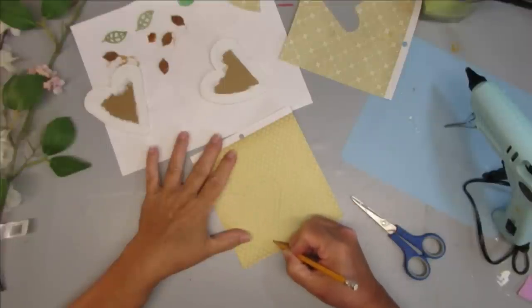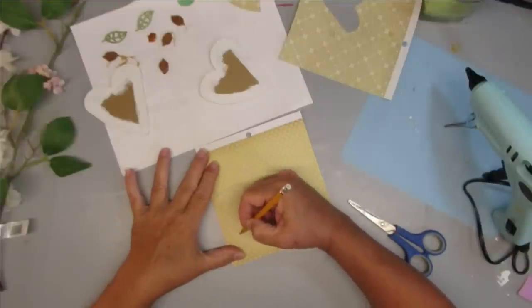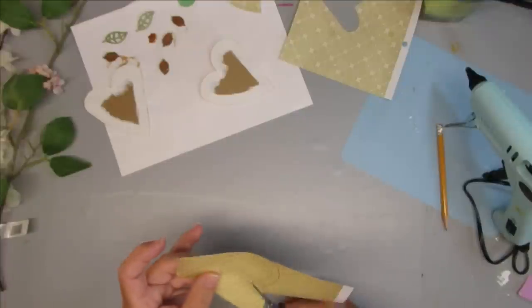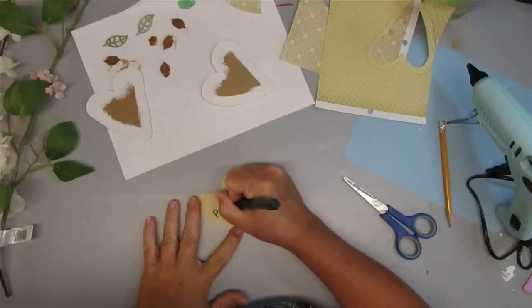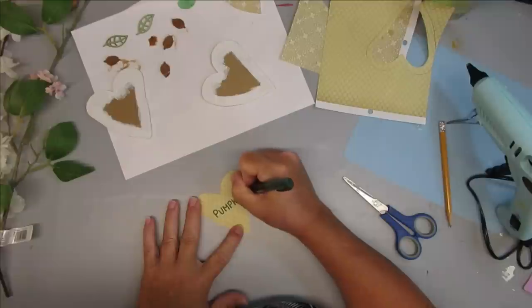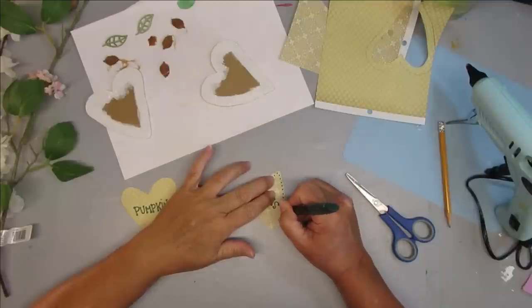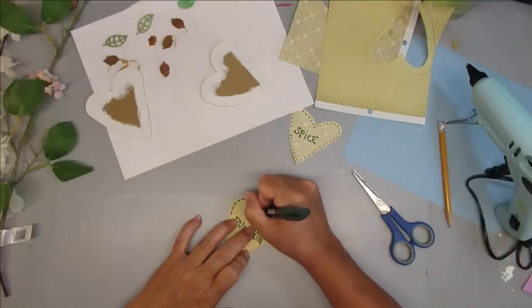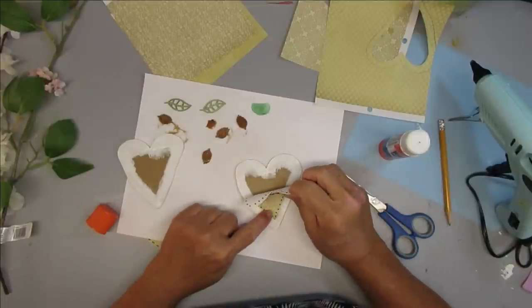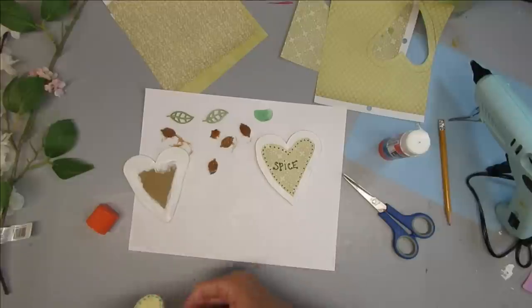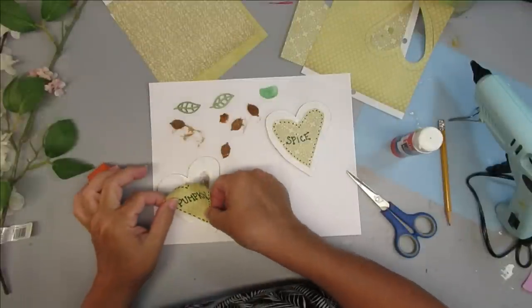I traced out one of the hearts onto scrapbook paper and now with my pencil, I'm retracing the line going in about a quarter of an inch. That's what I'm going to be cutting out and gluing onto my white hearts. For each of the tags, I'm writing the word pumpkin on one and spice on the other using a dark green sharpie marker. I'm free handing some capital letters and adding little dots to make it look more fun. To attach the cardstock to the heart, I'm just using a glue stick.